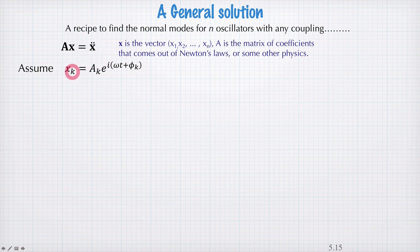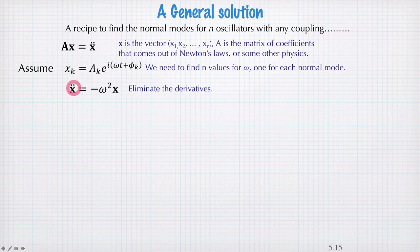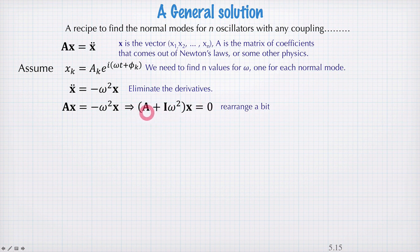First we'll assume that each x can be written as some amplitude multiplied by an oscillating exponential with frequency omega. The goal here is to find n values for omega — one omega for each normal mode, each with its own unique normal mode frequency. We can use this substitution to eliminate the second derivative from our equation: taking a derivative of x gives a factor of i omega, and doing that twice gives negative omega squared. So the second derivative of the vector x will be negative omega squared times the vector x. Substituting that into our equation, we find a matrix equation: A plus i times omega squared, where i is the identity matrix, multiplied by the vector x equals zero.